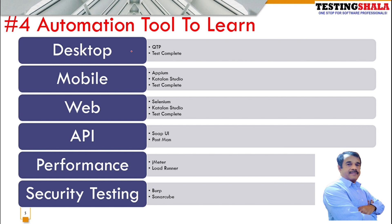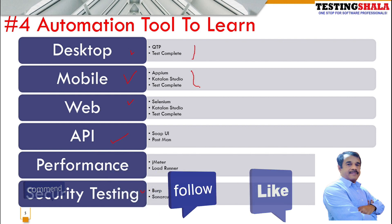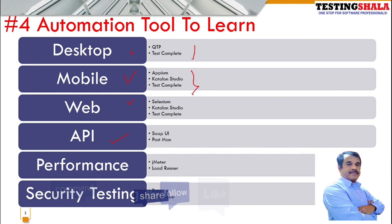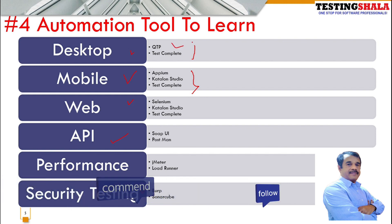The fourth step — once you are able to understand the overall test automation concepts — is to decide which kind of automation you want to bring and which area you want to work in. Whether you are going to work on desktop automation, mobile application automation, web application automation, API automation, or it could be performance or security testing — based on that, you should pick up the appropriate test automation tools for learning.